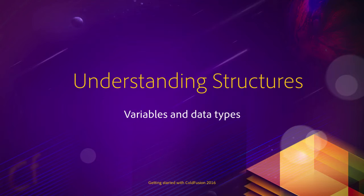At the end of the previous video, you saw the CGI and the server scopes, and you saw that these two scopes each contain a bunch of data. In other words, a single variable - server is a variable and CGI is another variable - a single variable contains a bunch of data. Now, how is that at all possible? How can a single variable contain a bunch of data? Well, it is time to meet some more complex data types used in ColdFusion.